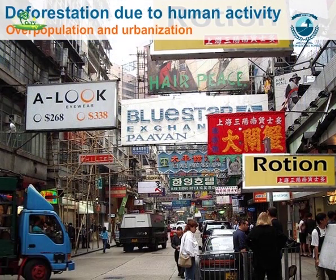Overpopulation and urbanization: As cities grow larger, to accommodate more people, trees are cut down to make more room for houses and roads.